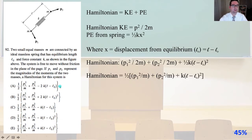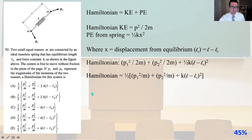Problem 92: two small equal masses m are connected by an ideal massless spring that has equilibrium length L₀ and force constant k as shown in the figure. The system is free to move without friction in the plane of the page. If p1 and p2 represent the magnitudes of the momenta of the two masses, a Hamiltonian for this system is: